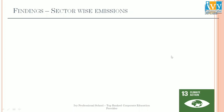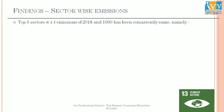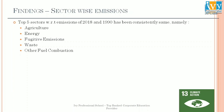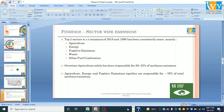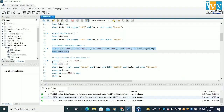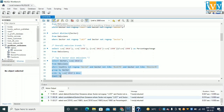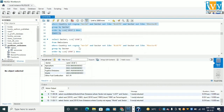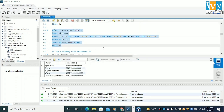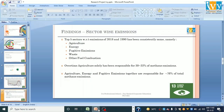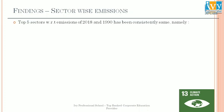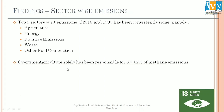For sector-wise emissions results: the top 5 sectors with respect to both 2018 and 1990 have been the same — agriculture, energy, fugitive emissions, waste, and other fuel combustion. I obtained this from my SQL query for top 5 sector emissions. I have noticed that agriculture is solely responsible for 30 to 32 percent of methane emissions across the data from 1990 to 2018.